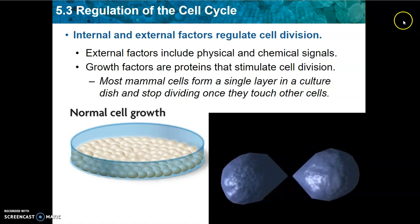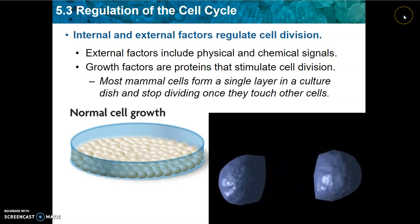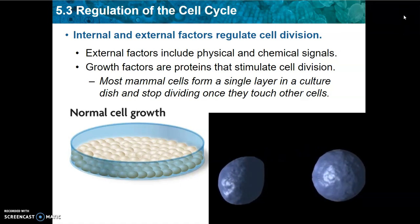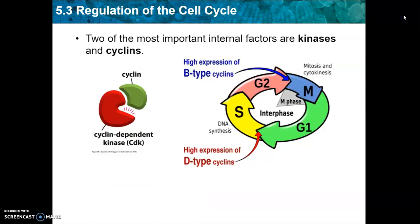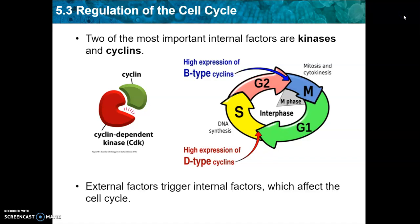Cancer cells do not obey this rule and will divide even if they do not receive appropriate signals. Two of the most important internal factors are called kinases and cyclins. External factors trigger internal factors which can affect the cell cycle.